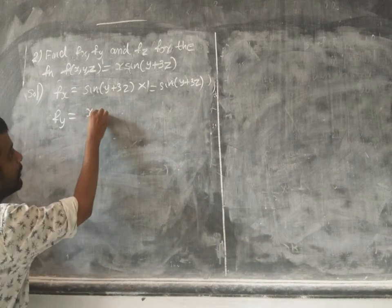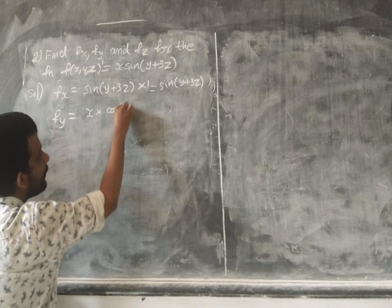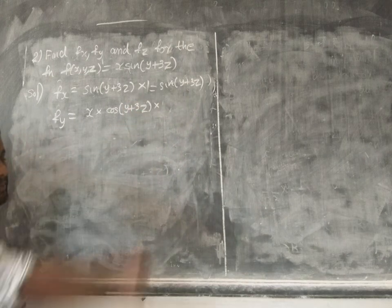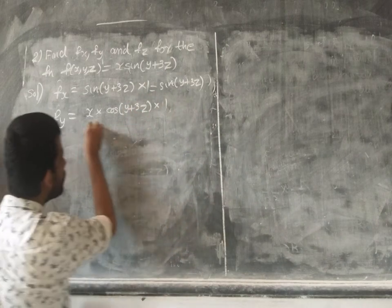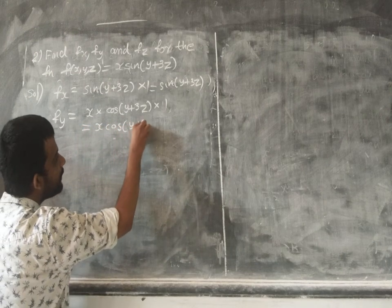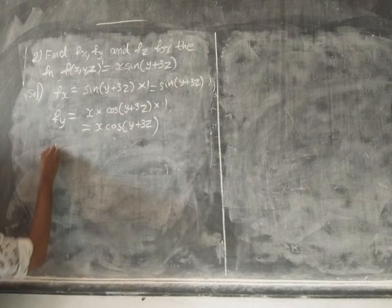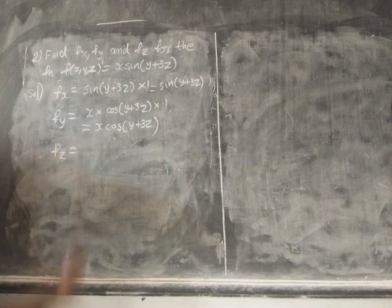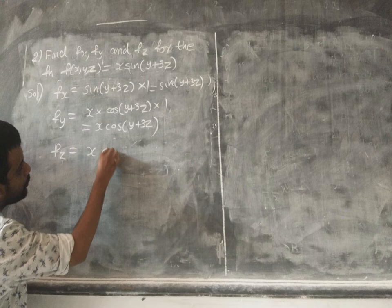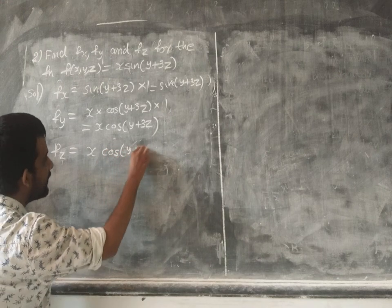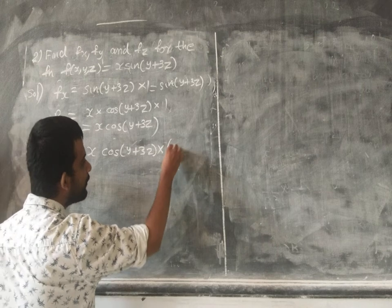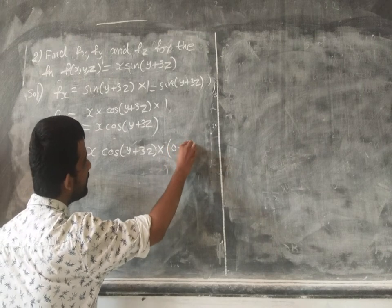For f_y: x times the partial derivative of sin(y + 3z) with respect to y, which gives x·cos(y + 3z) times the partial derivative of (y + 3z) with respect to y, which equals 1. So f_y = x·cos(y + 3z). Similarly, the partial derivative with respect to z gives 3z derivative as 3, so f_z = 3x·cos(y + 3z).